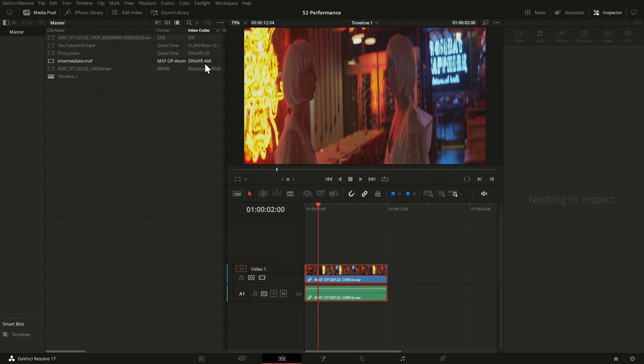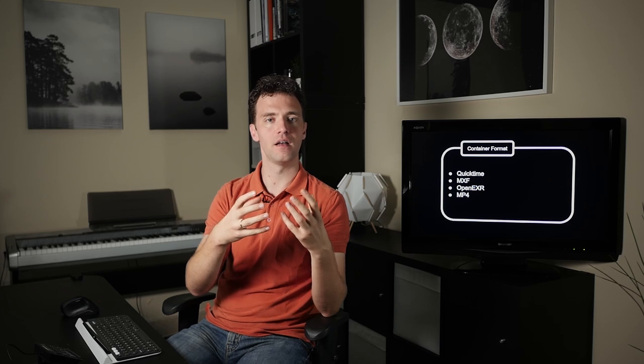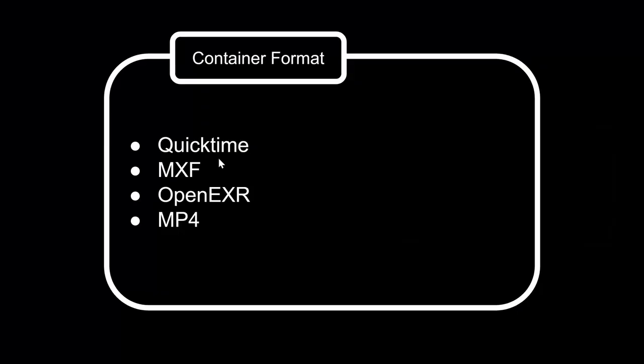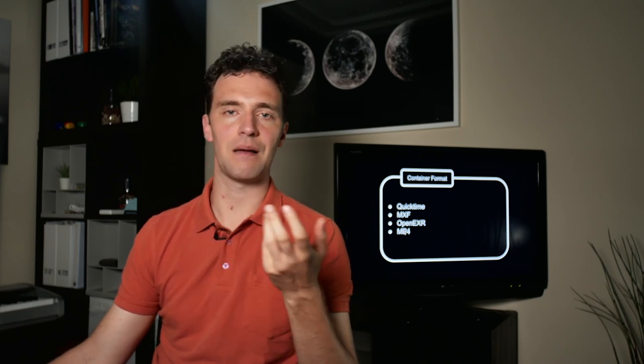Let's look at the difference from a very high level. When looking at a file, the first layer is the format — sometimes referred to as container, container format, or wrapper. That format or container decides how the different types of data inside the file are organized: video information, audio information, and metadata like timecode. All of this is wrapped into a format. Different formats include QuickTime, which is very popular; MXF, which is quite popular especially with Avid; OpenEXR, common in VFX; and MP4, common for YouTube and Vimeo. QuickTime and MP4 actually have some overlap — MP4 is basically a type of QuickTime.